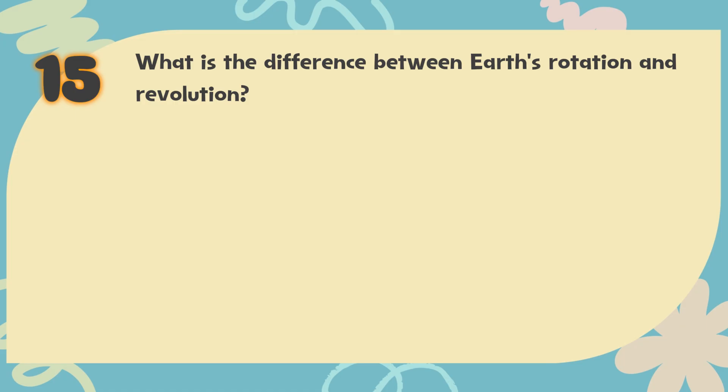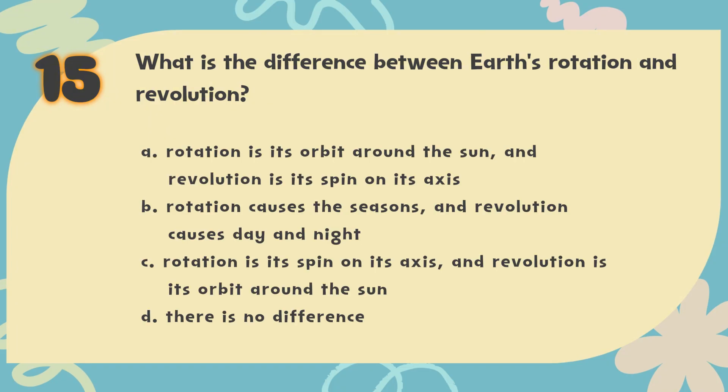Number 15. What is the difference between Earth's rotation and revolution? The choices are: A. Rotation is its orbit around the Sun and revolution is its spin on its axis, B. Rotation causes the seasons and revolution causes day and night, C. Rotation is its spin on its axis and revolution is its orbit around the Sun, D. There is no difference.